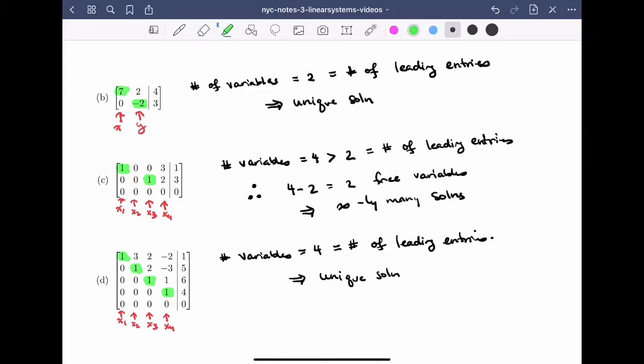So something to watch out for is I've often seen students make a mistake that as soon as they see a row of zeros, they think that the linear system has to have infinitely many solutions. And that's not the case. Remember, you really have to go back and look at the number of leading entries and compare that to the number of variables in the linear system.